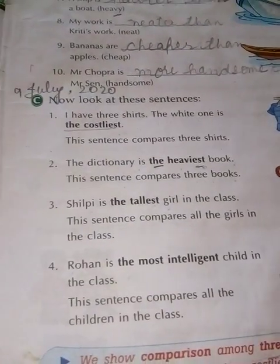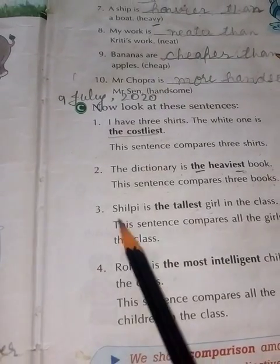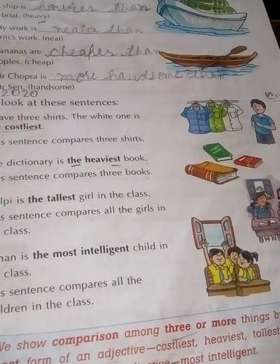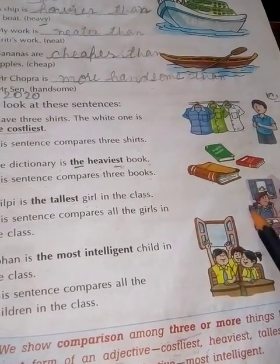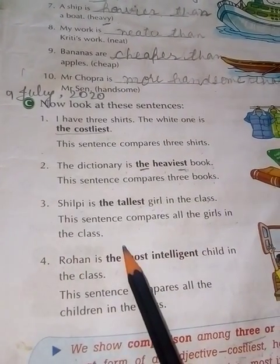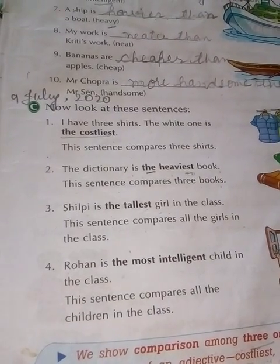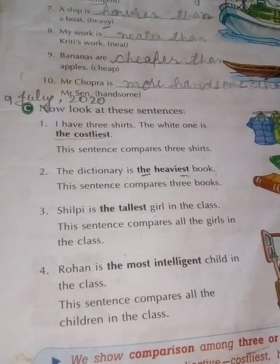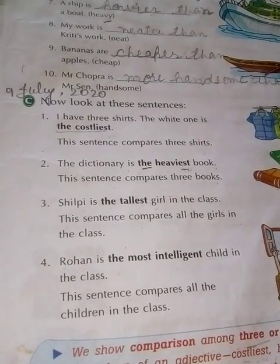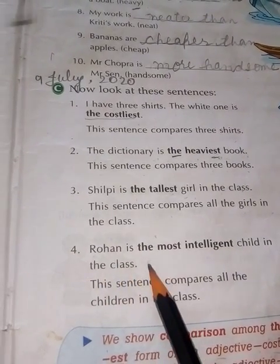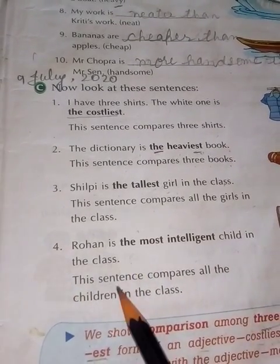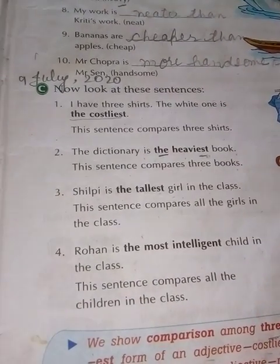Adjective में EST add करना होता है। Next point: Shilfi is the tallest girl in the class. यहाँ Shilfi को पूरी class के साथ compare कर रहे हैं। This sentence compares all the girls in the class — Shilfi सबसे लंबी girl है पूरी class में। Rohan is the most intelligent child in the class — Rohan को भी पूरी class में compare किया जा रहा है।